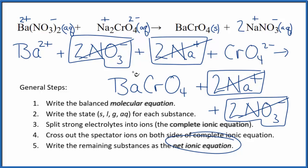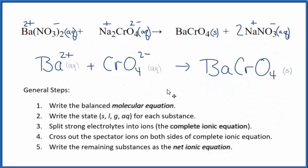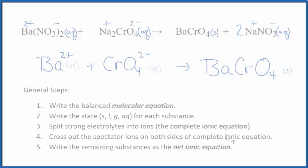I'll clean this up and write the states in to get our net ionic equation. This is the balanced net ionic equation for barium nitrate plus sodium chromate. If you look at charge, you'll see that charge is conserved: we have a 2+ and a 2−, giving a net charge of zero. This is a neutral compound, so the net charge is zero. The atoms are balanced as well. This is Dr. B with the net ionic equation for Ba(NO₃)₂ plus Na₂CrO₄. Thanks for watching.